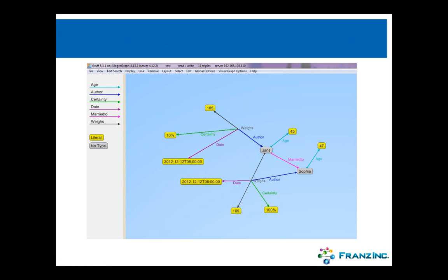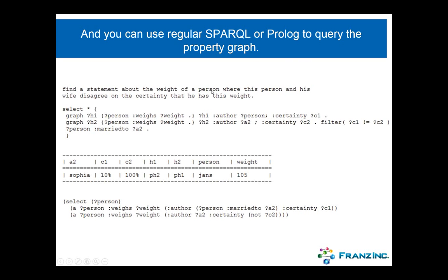This is how you specify it in text with triples. We have a tool called Gruff that can display graphs and helps you write SPARQL queries or graph queries completely visually. Here's how we represent these property graphs: Jans weighs 105 kilos, the author of the statement is Sophia, the certainty was 100%, and the date is recorded. This is how we see that both Jans and Sophia are objects married to each other. I can do regular SPARQL queries or Prolog to query the property graph. For example, find all statements about the weight of a person where this person and his wife disagree on the certainty.